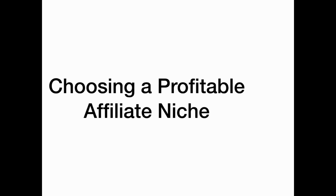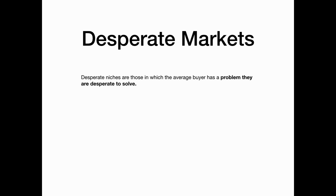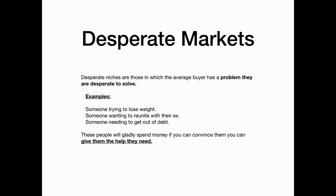Choose a profitable niche. There are three types: desperate niche markets, passion-based niches, or everyday markets. Let's take a closer look at each niche segment so you can better understand how they may make you money. Desperate markets are niches that involve average buyers that have a problem they are desperate to solve. Examples would be someone trying to lose weight, get back with their ex, or get out of debt. These people would gladly spend money if you can convince them you can give them the help they need in solving their problem. In desperate markets, you are a problem solver.